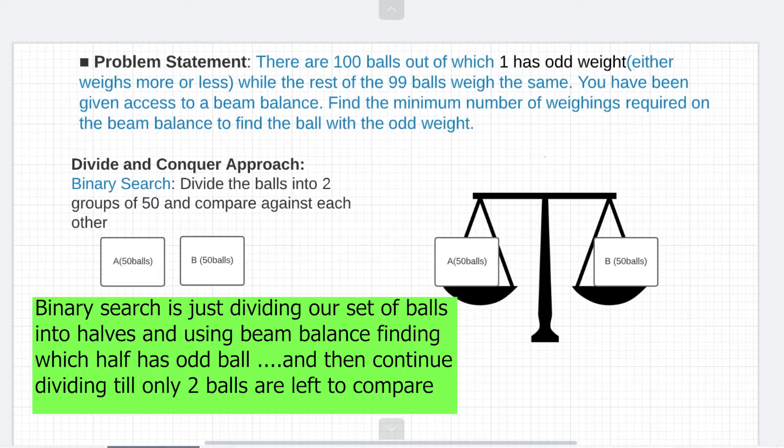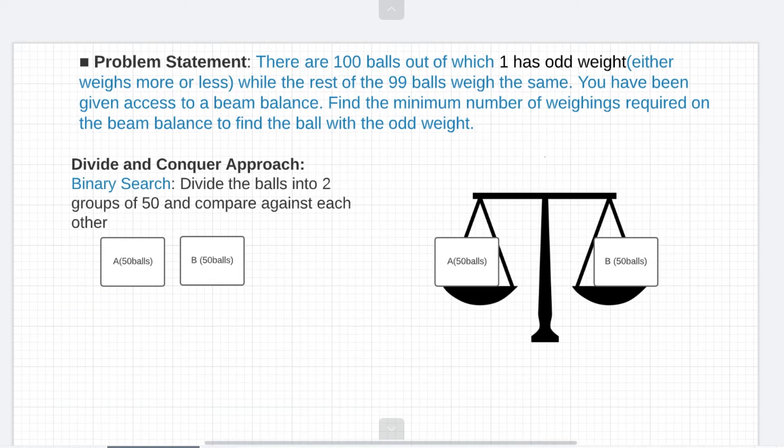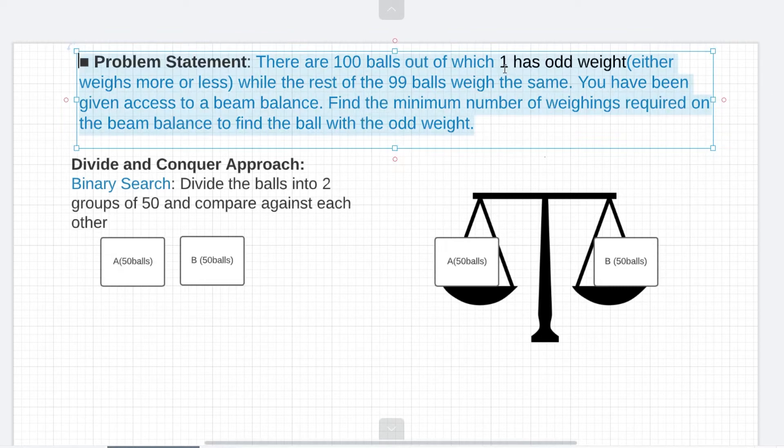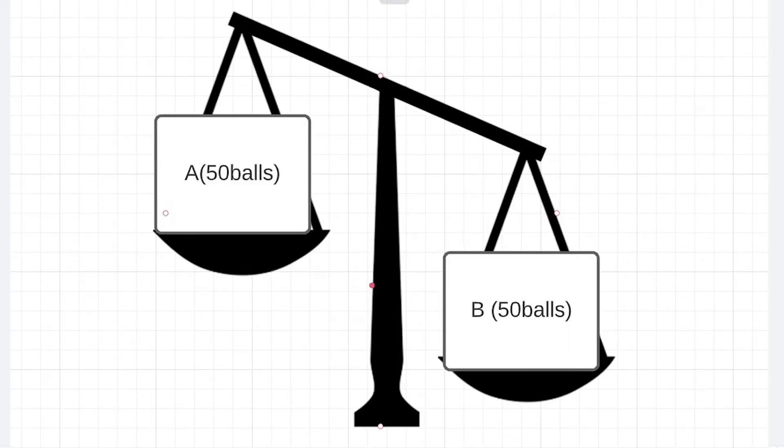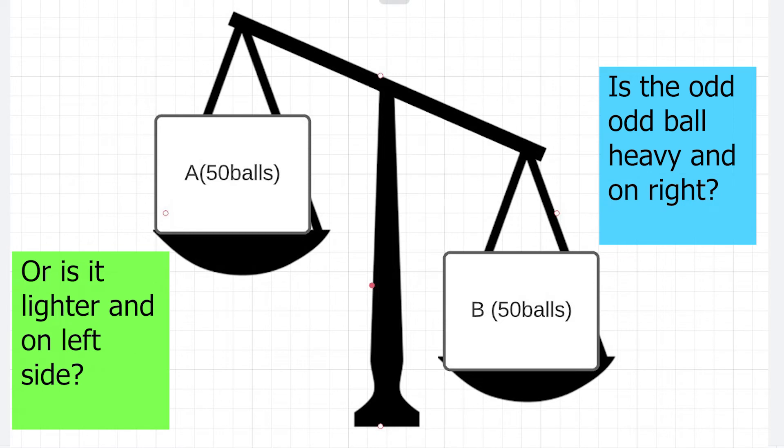So here let's divide a set of 100 balls into two groups of 50 balls and let's compare them against each other. Now definitely one of the sides will go down because the odd ball will be present on either the right or the left side. But if you carefully think this approach has a problem and the problem arises because the problem statement says that we don't know whether the ball is weighing more or less. So let's say if the right side goes down we cannot say with certainty that this side has the odd ball. It might also be the case that the ball is lighter and is actually on the left side.